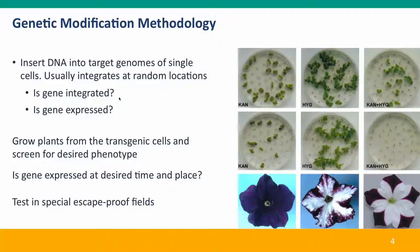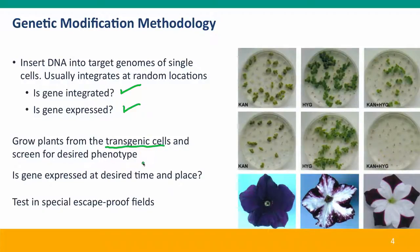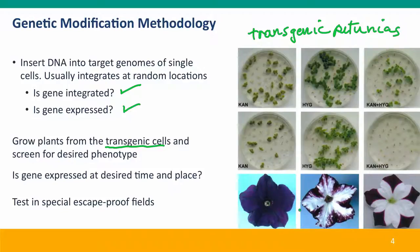So you have to check: did the DNA that you put into the cell actually integrate into the genome? And is that DNA expressed? Even if the DNA has its own promoter, it might be in a part of the genome that's normally quiescent and not well expressed. So you have to check that your gene is expressed. Then you grow plants from your now transgenic cells and start screening for the desired phenotype. Here we have an example of cultures being grown of transgenic petunias, in which the gene for the purple pigment is being selectively shut off in some parts of the flower by antisense RNA.